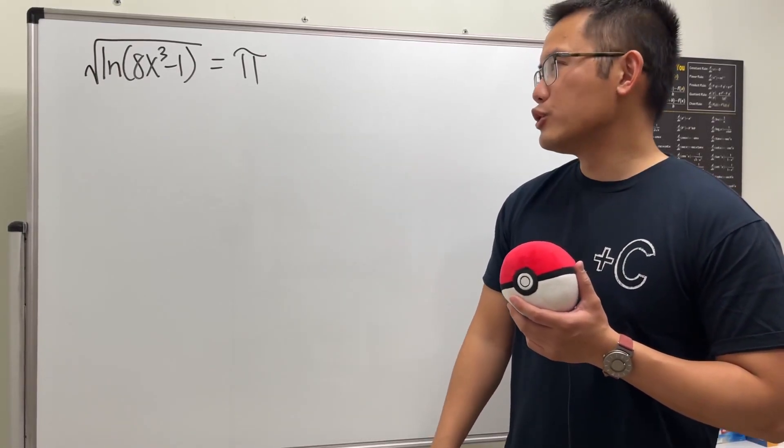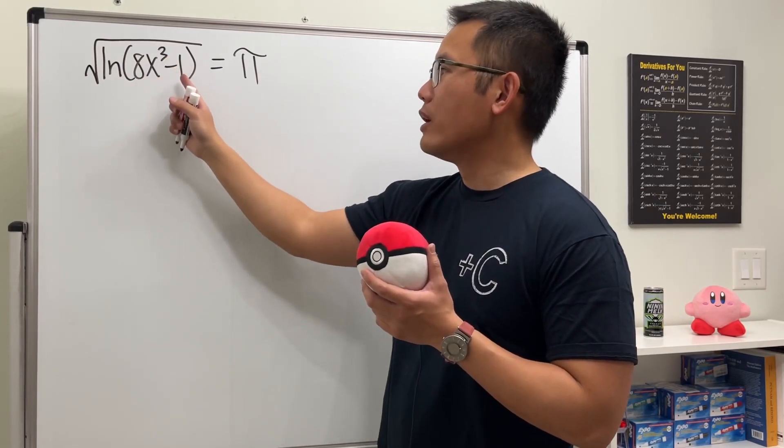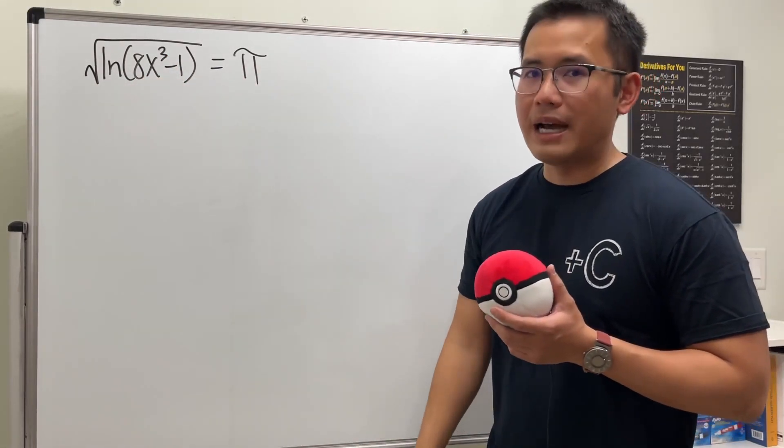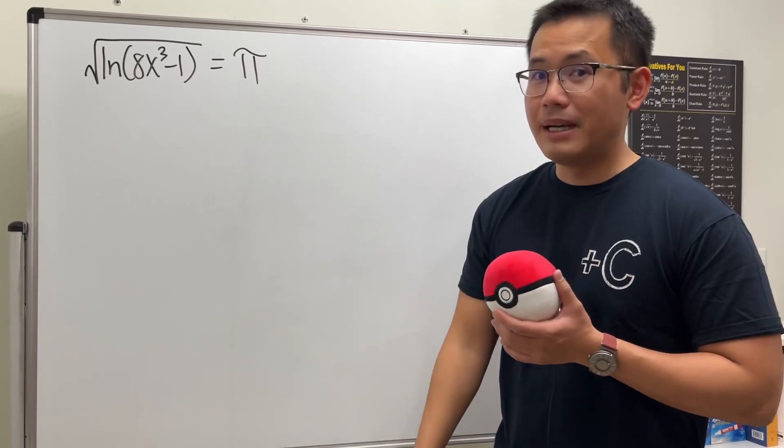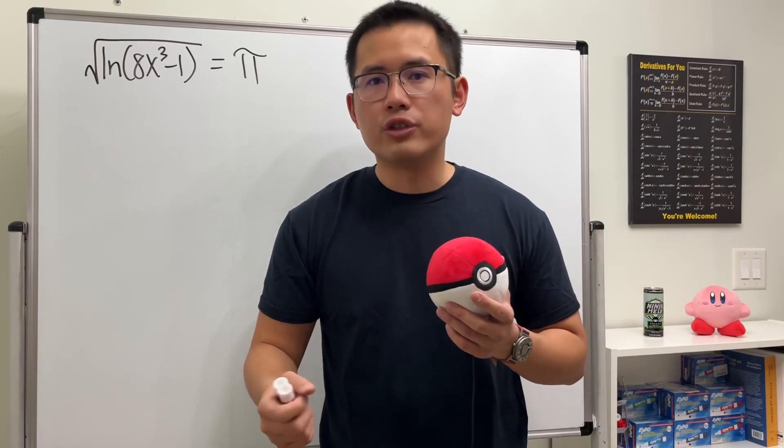Okay, we are going to solve another all-in-one algebra equation. We have the square root of ln of 8x to the third power minus 1, and that's equal to π. Yes, I made this up and I will show you how to solve it. The key is we will have to know what inverse operation we have to apply at each stage.